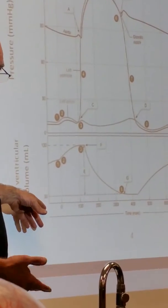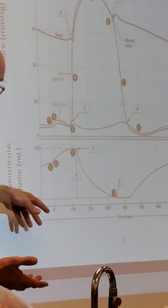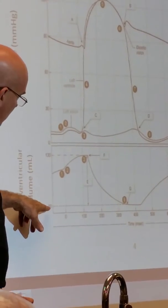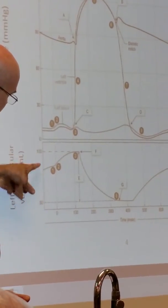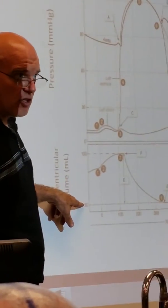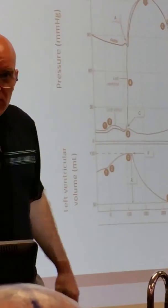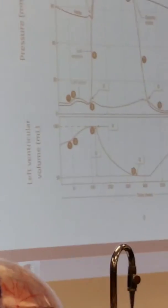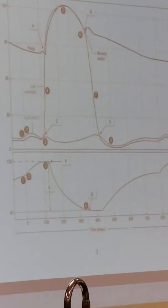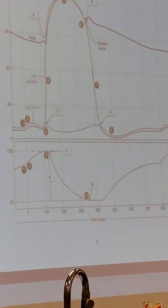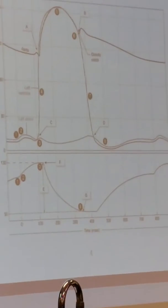Your stroke volume was 130 minus 50—that's 80. Your stroke volume was 80, but you had 130 ml of blood in your heart. What's your ejection fraction? 80 divided by 130.